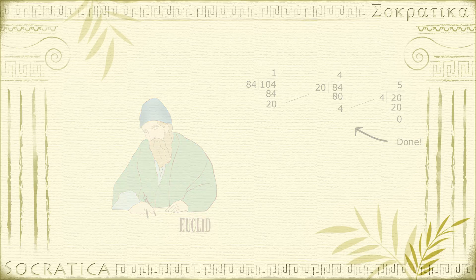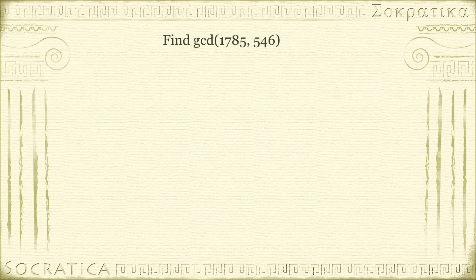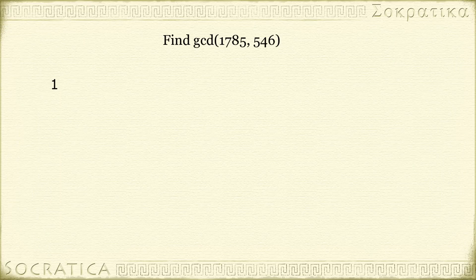An example will help clarify this. So let's begin and find the greatest common divisor of 1,785 and 546. Let's divide 1,785 by 546. If you perform this division, you get a quotient of 3 and a remainder of 147.